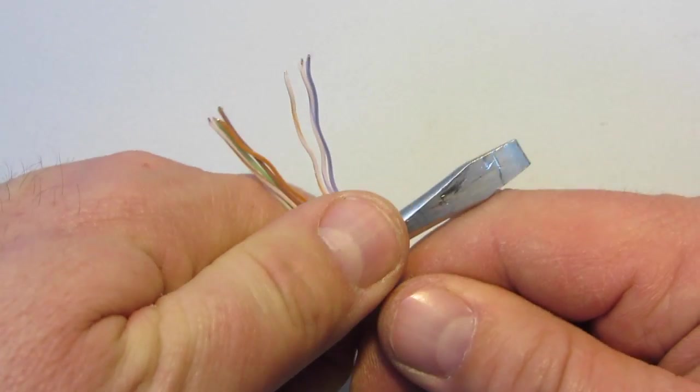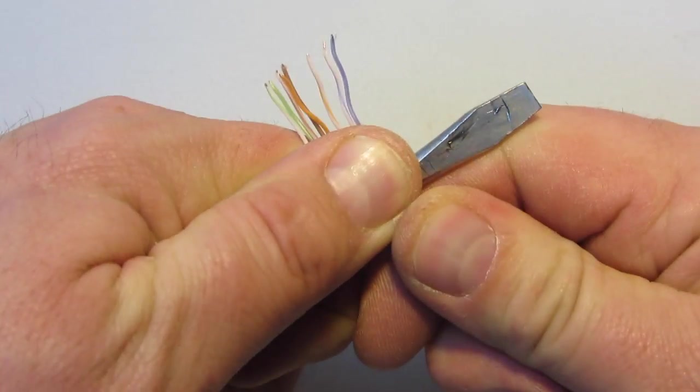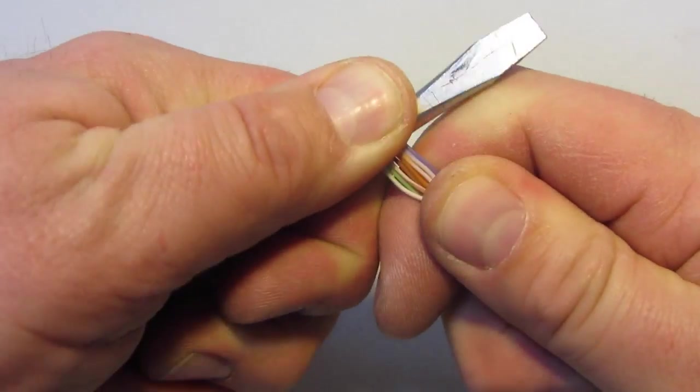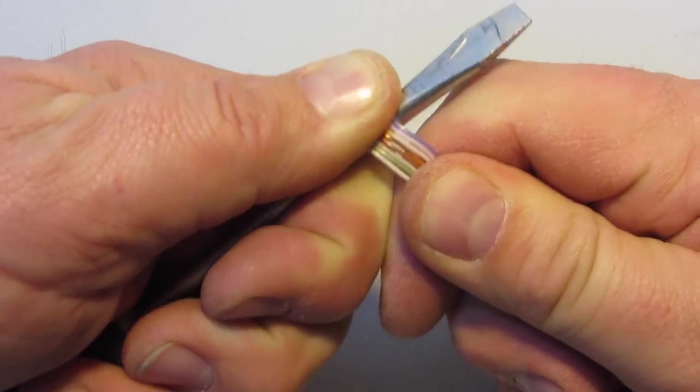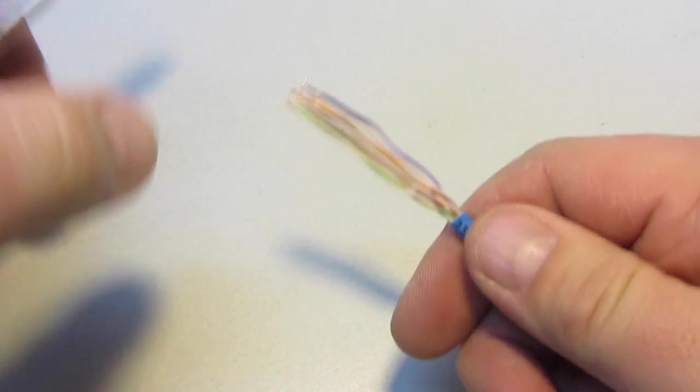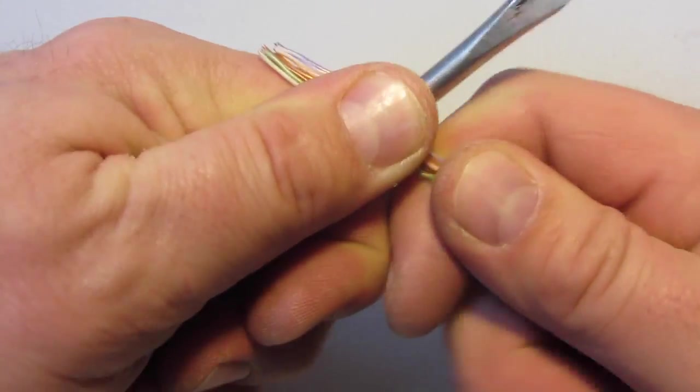Once these wires have been unraveled, take a screwdriver and run them between your thumb and the screwdriver. This helps straighten the wires.